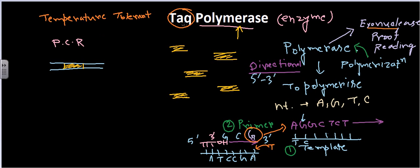Taq polymerase is temperature tolerant — it can be present at more than 90°C. It can polymerize DNA sequences at 80°C and can continue the polymerization process at these high temperatures of 80 or 90 degrees Celsius.